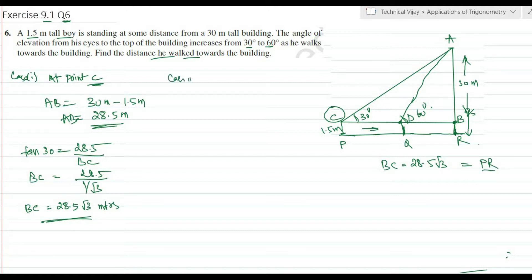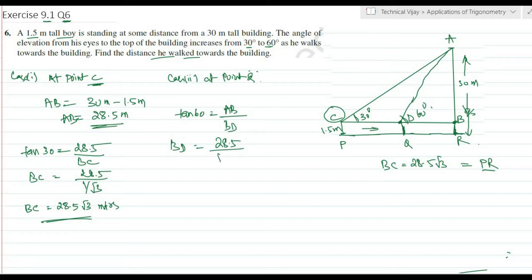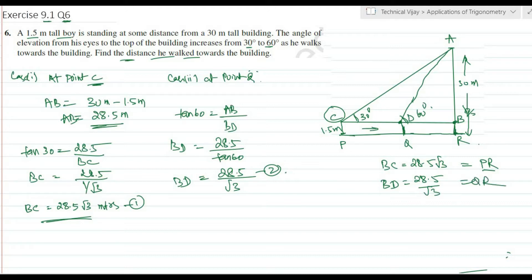Case 2: the boy is at point Q. The angle of elevation is 60 degrees. Tan 60 equals opposite divided by adjacent, so tan 60 equals AB divided by BD. BD equals 28.5 divided by tan 60 equals 28.5 divided by root 3. This BD also equals QR.